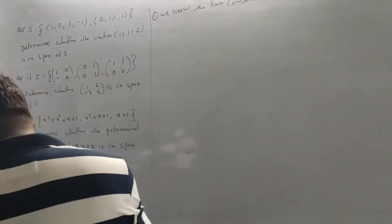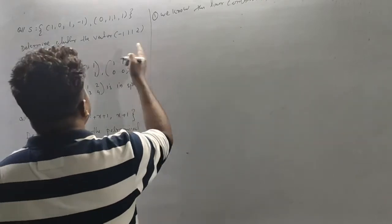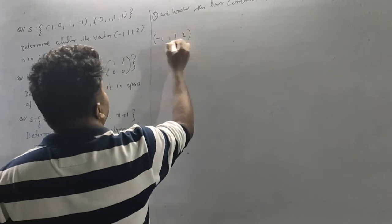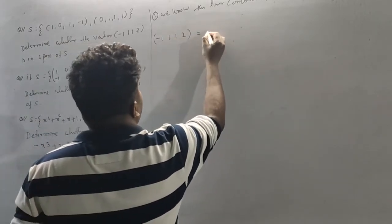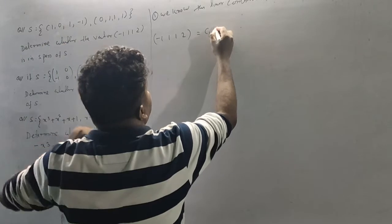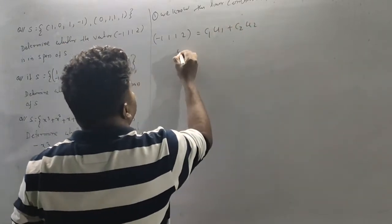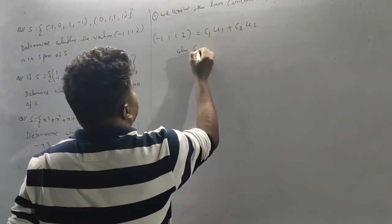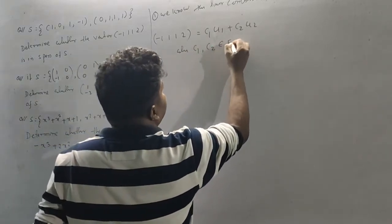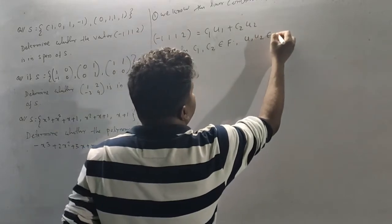We write: (-1, 1, 1, 2) = C1·U1 + C2·U2, where C1 and C2 belong to F, and U1, U2 belong to V.